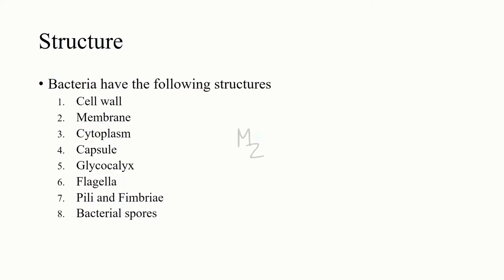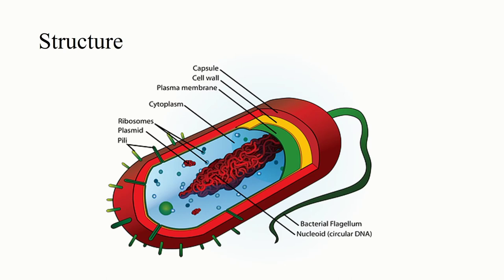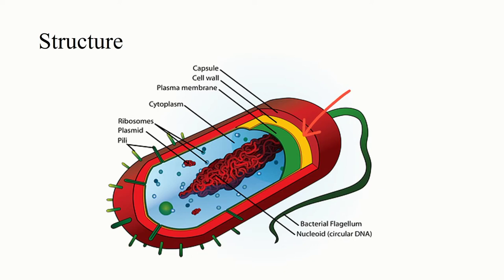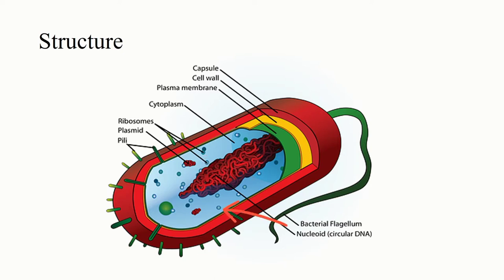Bacteria have the following structures: cell wall, cell membrane or plasma membrane, cytoplasm, capsule, glycocalyx, flagella, pili and fimbriae, and bacterial spores. This is how bacteria looks. The green tail-like structure is the bacterial flagellum. The red outer covering is the capsule. Then we have the yellow-colored cell wall, the green-colored plasma membrane, the tree matrix which is cytoplasm, the nucleoid containing circular DNA, the plasmid, and ribosomes in the cytoplasm.